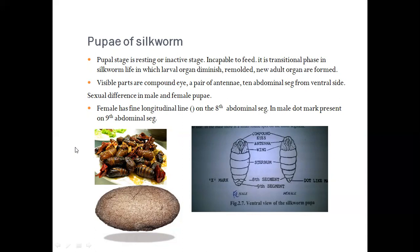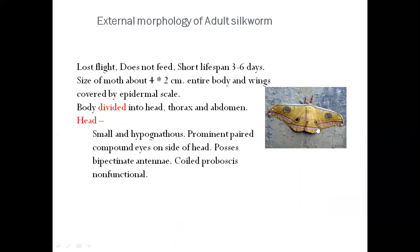The last stage is the adult silk moth. Important characteristics: it is not attracted to light, it bears wings but does not fly, and it does not feed. Its lifespan is very short, about three to six days. Size of the moth is about 4 by 2 centimeters. The entire body and wings are covered by epidermal scales. Like the larva, the adult body is divided into head, thorax, and abdomen. The head is small and hypognathous. It bears prominent paired compound eyes, bipectinate antennae, and a non-functional coiled proboscis.